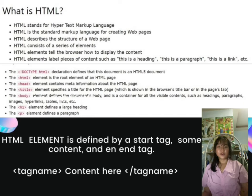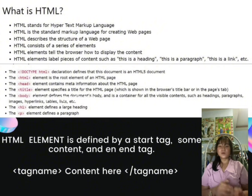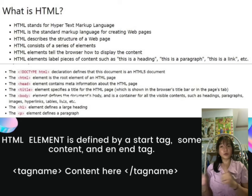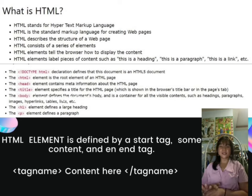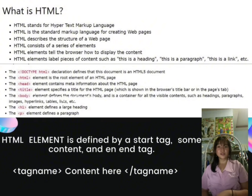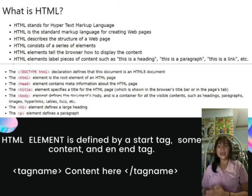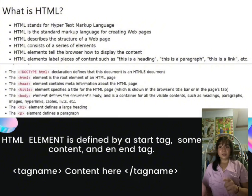So the structure is: start tag, content, then end tag. Whatever you put in the start tag — for example H1 — must match the end tag. If they are different, it will cause an error. All HTML elements can have attributes. For example, href is an attribute of the anchor tag and specifies URL links. For images, src is the attribute of the image tag and specifies the path of the image to be displayed.